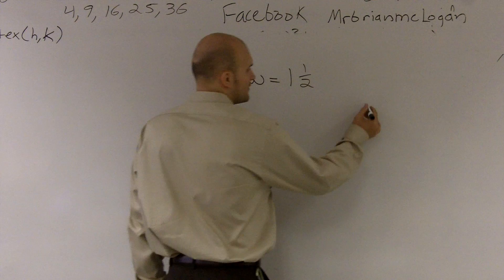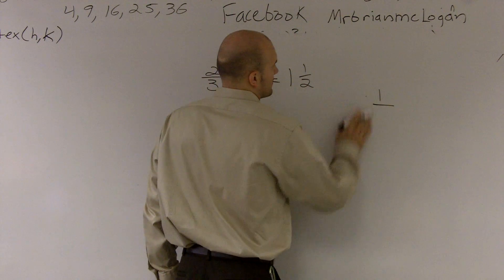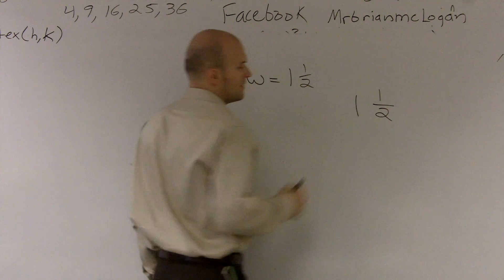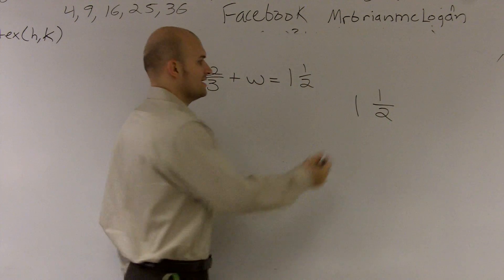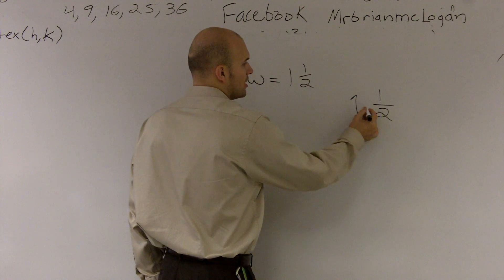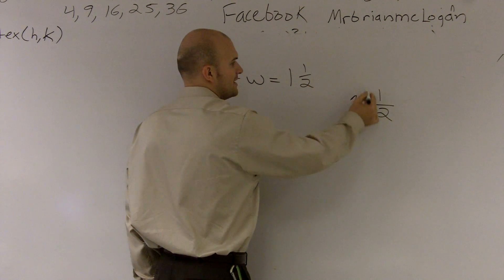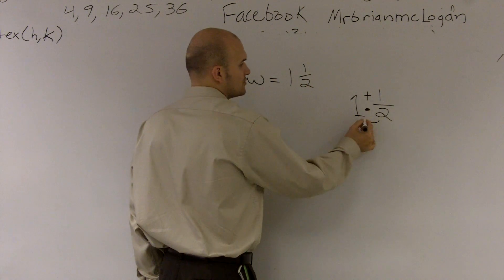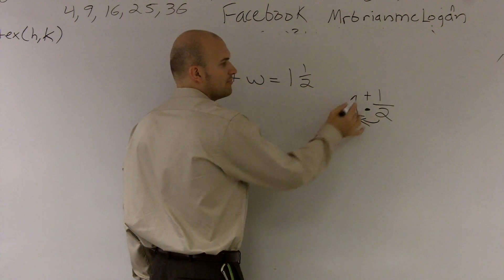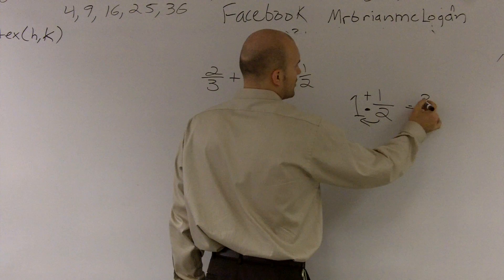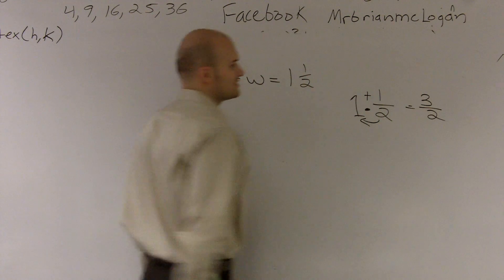And for those of you that need a little review for that, the way that we, one way we like to do that is take your denominator, multiply it by your whole number, and then add it to your numerator. So 2 times 1 is 2, plus 1 is 3. So as an improper fraction, we can write this as 3 halves.